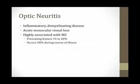One disorder that can lead to anopia that you should know for Step 1 of your boards is optic neuritis. This is an inflammatory demyelinating condition of the optic nerve that leads to acute monocular vision loss. You should know that optic neuritis is highly associated with multiple sclerosis — it is the presenting feature of multiple sclerosis in 15 to 20% of patients, and of patients who have MS, 50% of them will develop optic neuritis at some point during the course of their illness.